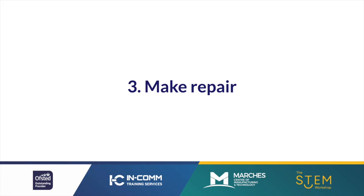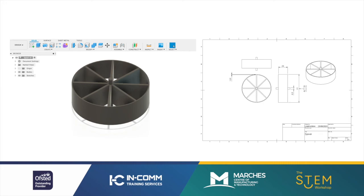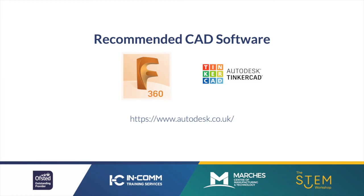Once you have your measurements and understand tolerance, you can begin to make the repair. If you have the facility to use traditional modelling techniques, go for it. If not, you can design and manufacture the product using computer aided design. Here is a screenshot of the spool manufactured within Fusion 360, and to the right-hand side we have an engineering drawing of that particular spool. The recommended CAD software is Fusion 360, part of the Autodesk software solutions, which is free for educational use.